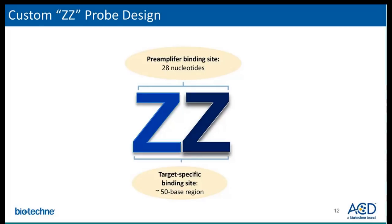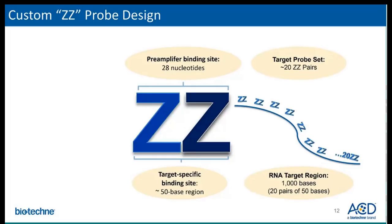Once two Zs hybridize, this creates a 50-base target-specific binding site on the bottom of the Z-Z pair. The top of the Z is the base for the amplification structure. Where the two Zs hybridize, it creates a binding site upon which a pre-amplifier can bind, and the amplification tree can be built. A standard RNAscope probe for a target sequence of 1,000 base pairs or more consists of about 20 Z-Z pairs pooled together, designed to hybridize next to each other along a target region. However, only a few Z-Z pairs are necessary to bind to the target RNA sequence to generate enough signal for molecular detection.